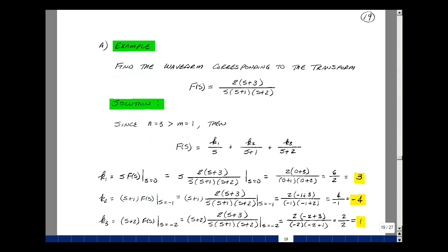Let's do another example. Suppose you have a waveform whose transform is f(s) = 2(s+3)/[s(s+1)(s+2)]. The highest power of s in the numerator is 1, and in the denominator it's 3. So we do have n greater than m, and we can use our partial fraction expansion property. Taking our three denominator terms s, s+1, and s+2, there exists k1, k2, and k3.